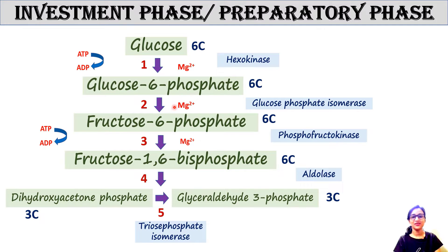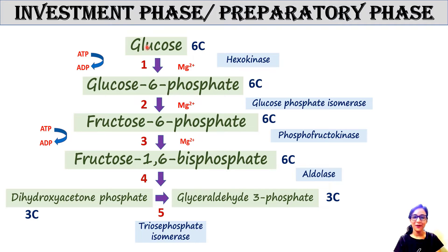First, the investment phase. A glucose molecule — a 6-carbon molecule — is phosphorylated to form glucose-6-phosphate by the enzyme hexokinase or glucokinase. A phosphate group is attached to carbon number 6 of glucose. The enzyme is called hexokinase because it adds a phosphate group (kinase) and its substrate is a 6-carbon compound (hexo). One molecule of ATP is consumed, and magnesium is used as a cofactor.